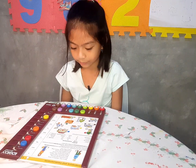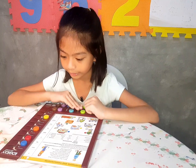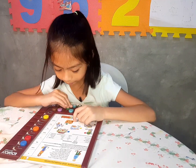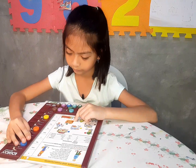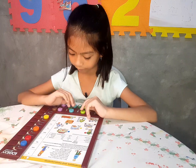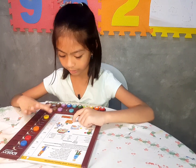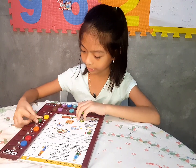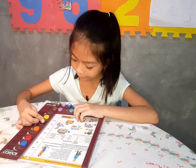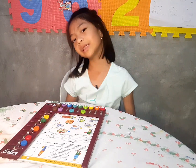Next one is green, and there's an arrow. I think it's kilometers. KM means kilometers.